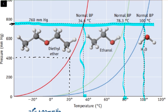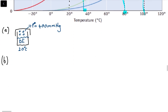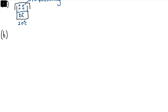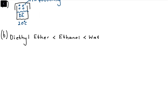Looking at the boiling points from the graph, diethyl ether has the weakest intermolecular forces, followed by ethanol, followed by water. That makes sense: diethyl ether is an ether with CH3 groups, ethanol has an OH group, and water is H2O.